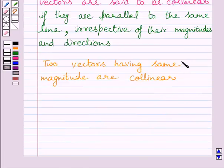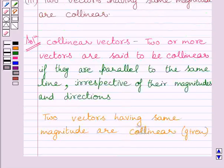Now the given statement is, two vectors having same magnitude are collinear. We have to find if this statement is true or false. By the definition of collinear vectors, we know two or more vectors are collinear if they are parallel to the same line, whatever be their magnitudes and directions.